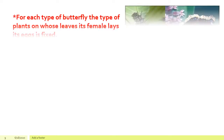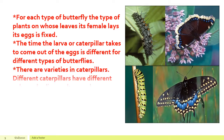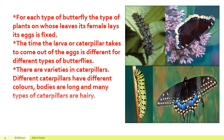So now children, you know how every butterfly passes through these four stages to grow into an adult beautiful butterfly. But do you know that each type of butterfly lays its eggs on a fixed particular plant? And the time the larva takes to emerge from the eggs is different for different types of butterflies. There is a great variety in caterpillars — they come in different colors, their body is long, and some types of caterpillars are hairy.